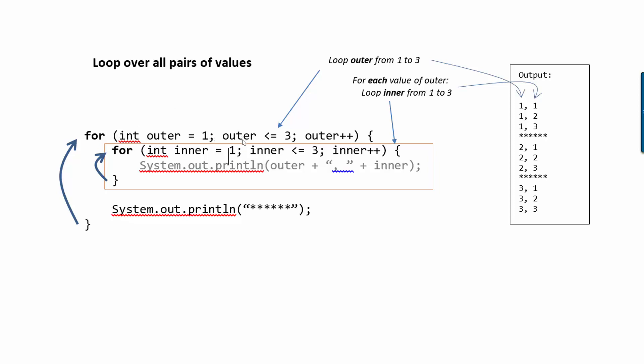So for example, outer starts as one. And we ask, is outer less than or equal to three? And the answer is yes. So now we perform this loop. So while outer is one, we loop inner all the way from one up to three. And that's what's producing this output over here. So you see in my print statement, I'm printing outer first and inner second. So this first number is outer and this second number is inner.